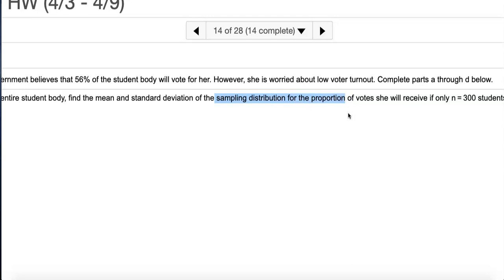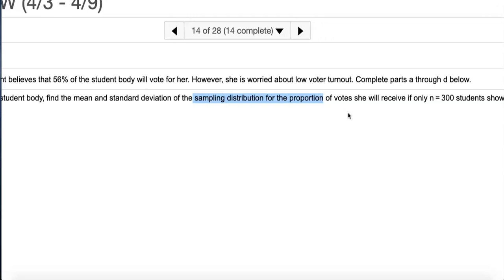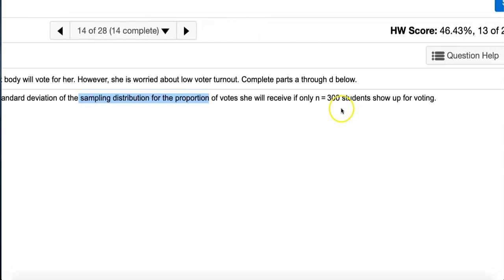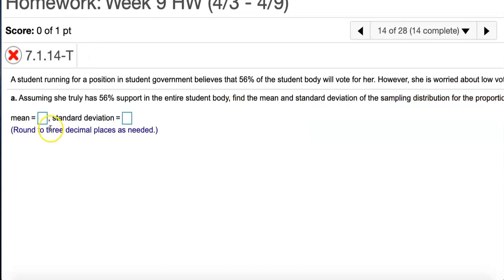This is straight from lesson 7.1 that we just went over today. Sampling distribution for the proportion—remember how to find the mean and standard deviation for these of those she will receive if only n equals 300 students show up for voting.